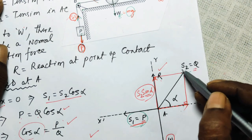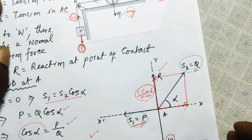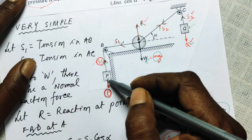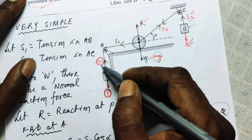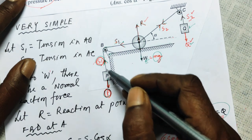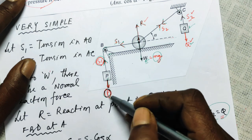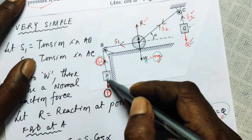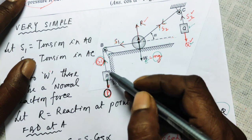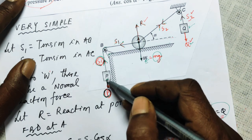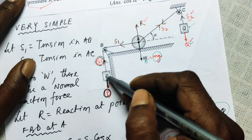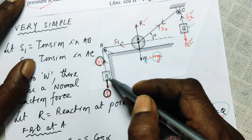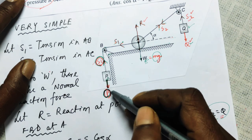S1 acts to the left and S2 acts along string AC. S1 equals P, and S2 equals Q — let me explain why. Since P is neither moving down nor moving up, S1 is holding its weight, so S1 equals P. If P were moving down, its weight would have to be greater than S1; if moving up, S1 would be greater than P. Since P is stationary, S1 equals P.